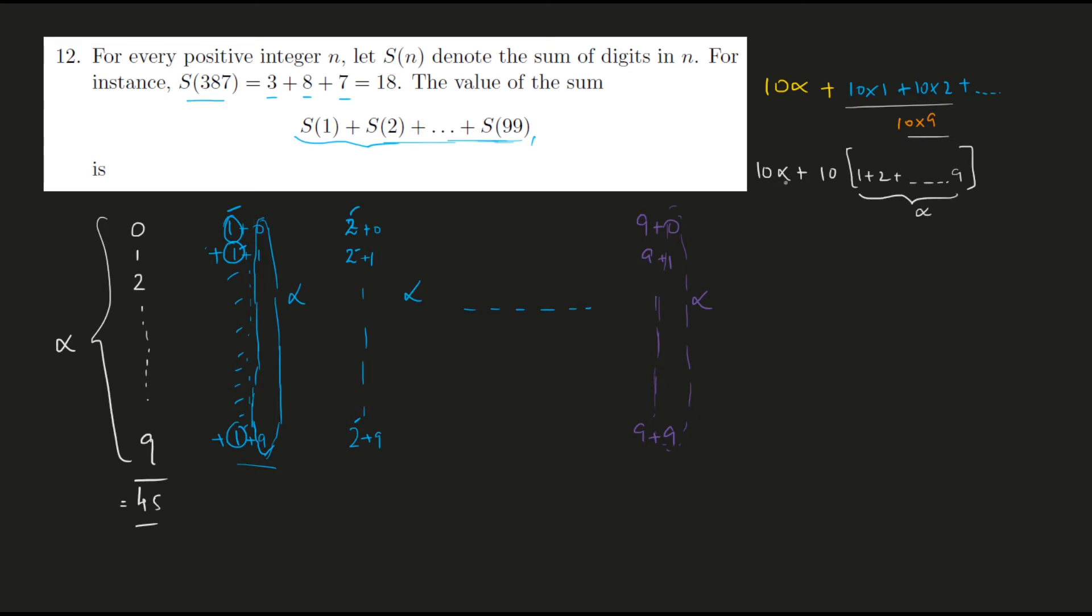So what we essentially have is 10 alpha plus 10 alpha, that is 20 alpha. And alpha is obviously 45, so it's 20 into 45, that is 900. And so the answer is option number C.